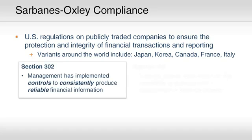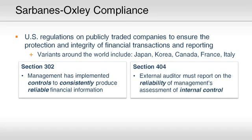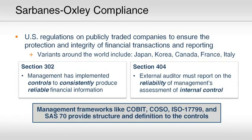Look at two key SOX sections as an example. Section 302 is about controlling financial information so it's consistent and reliable. Section 404 is about having external auditors validate management's self-assessment. Think about translating those into security requirements — there are a lot of different approaches you could take. Organizations turn to management frameworks like COBIT and COSO to provide tangible structure and definition when building SOX enforcement.